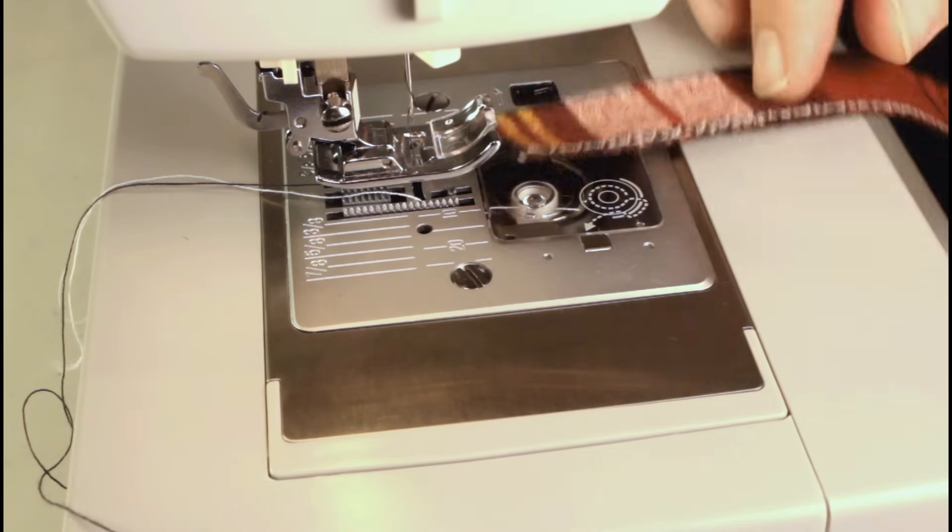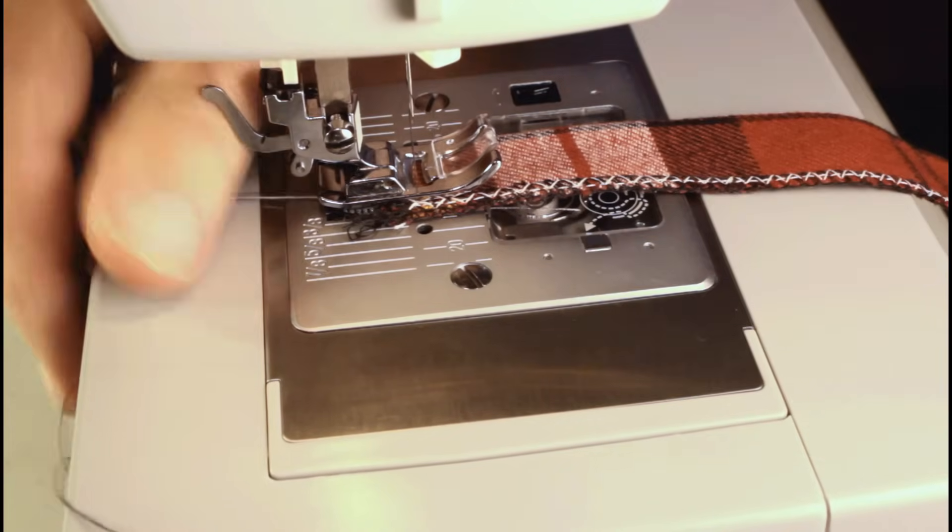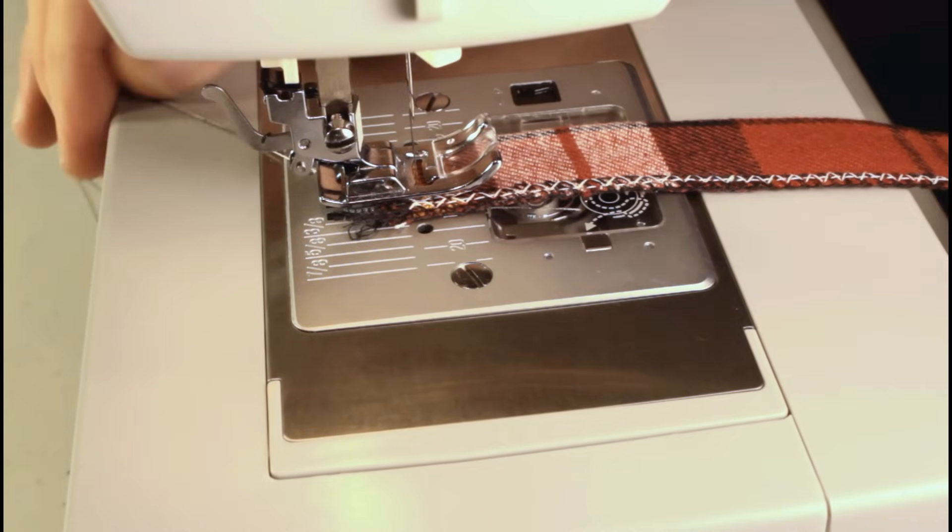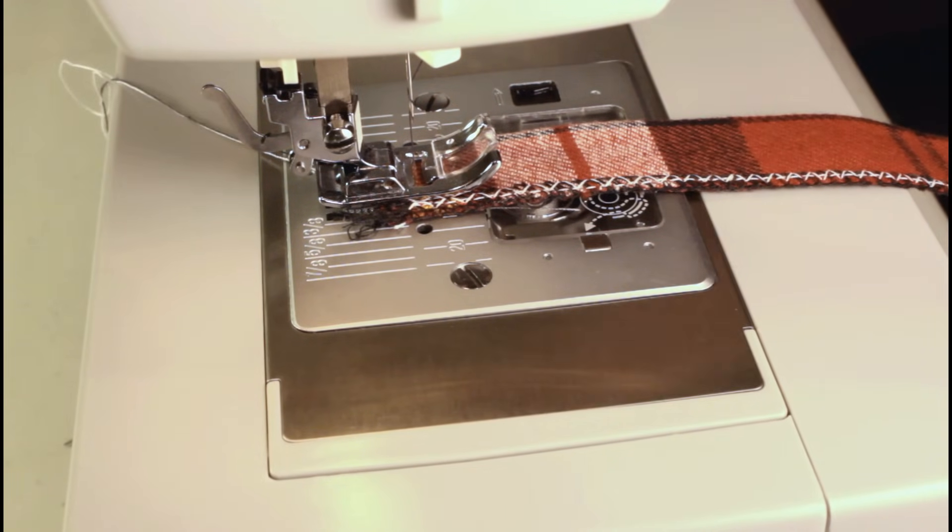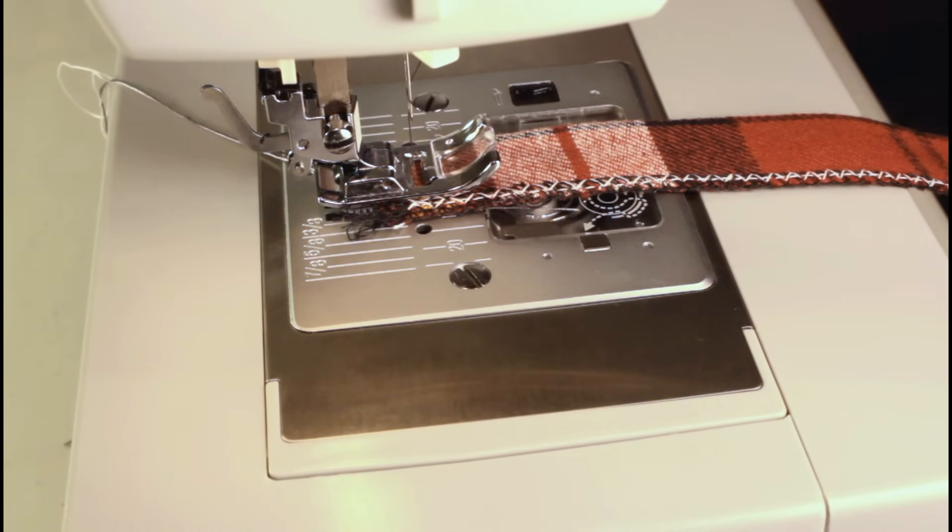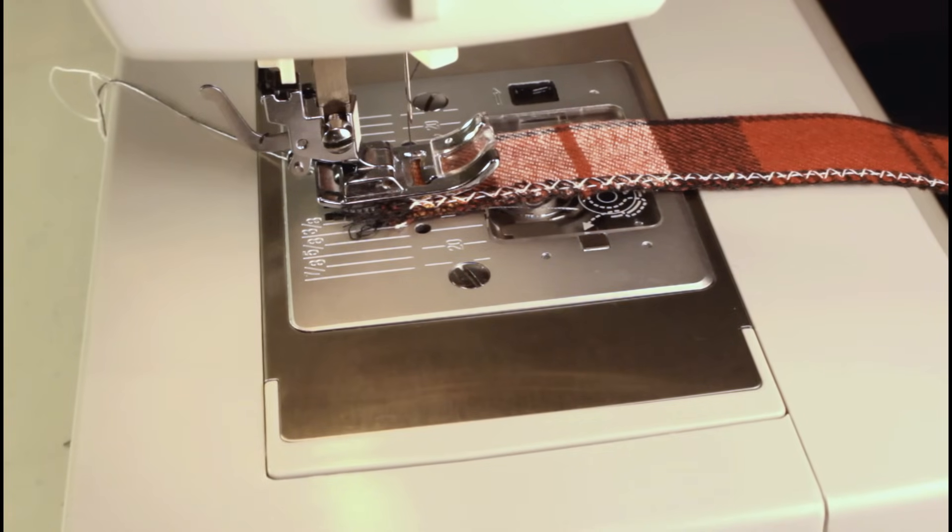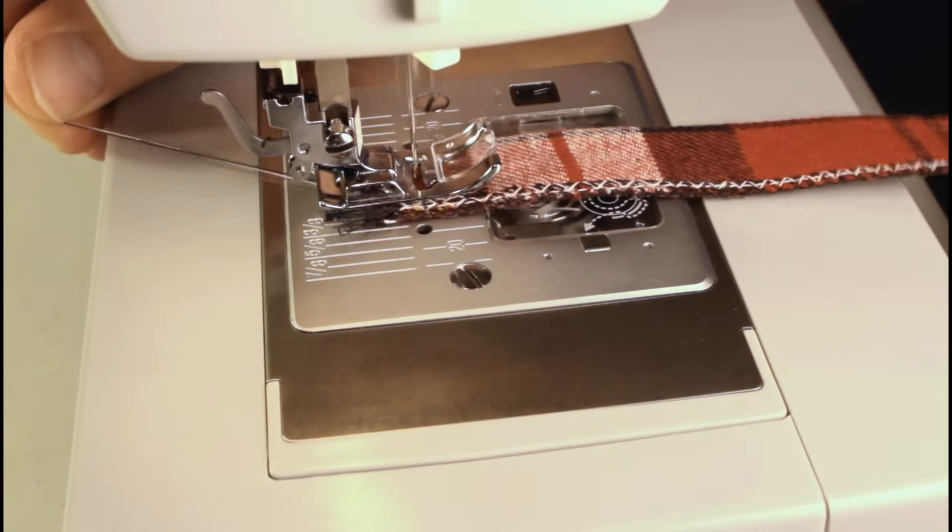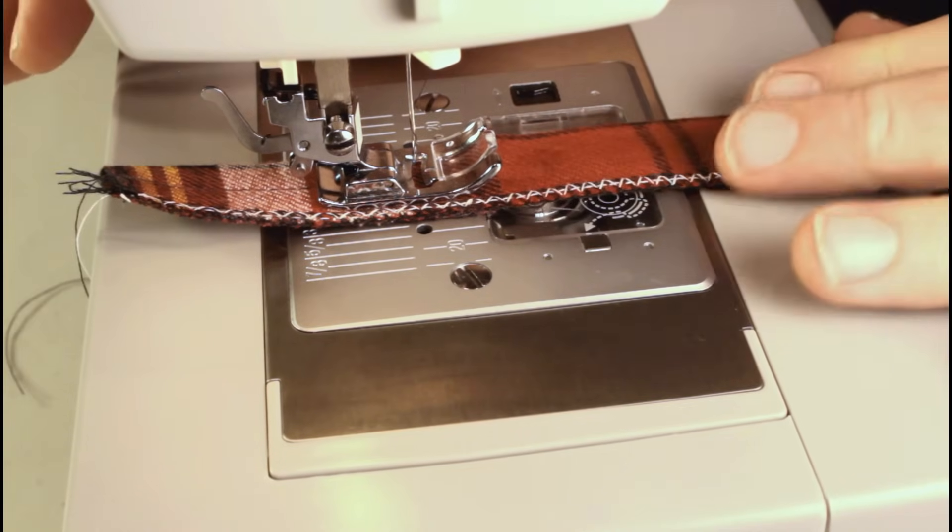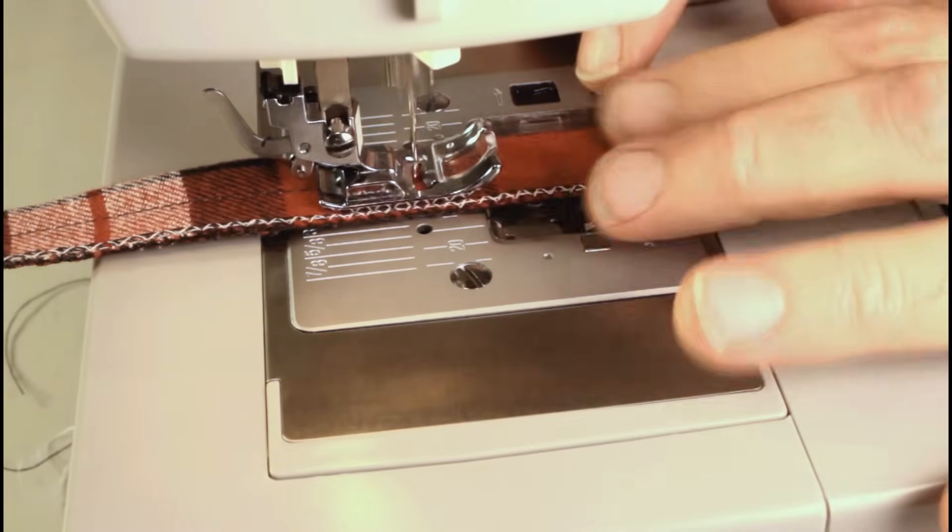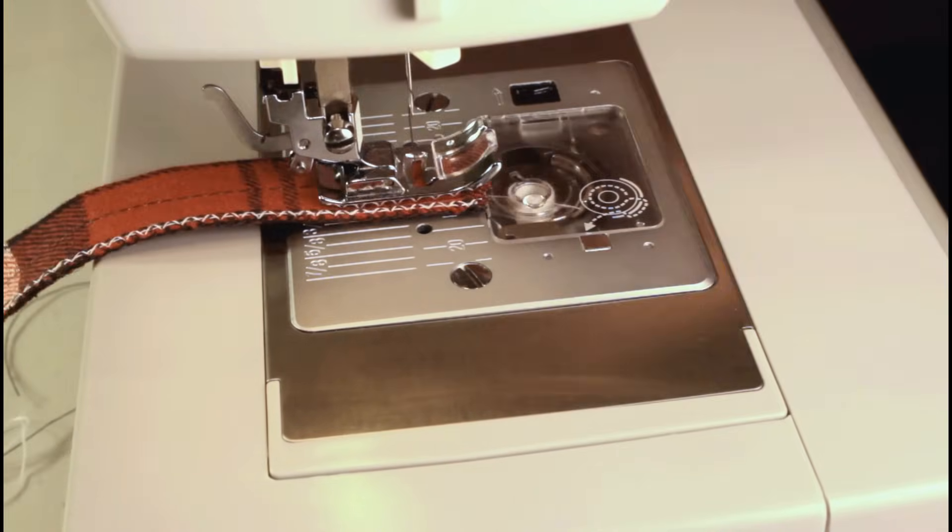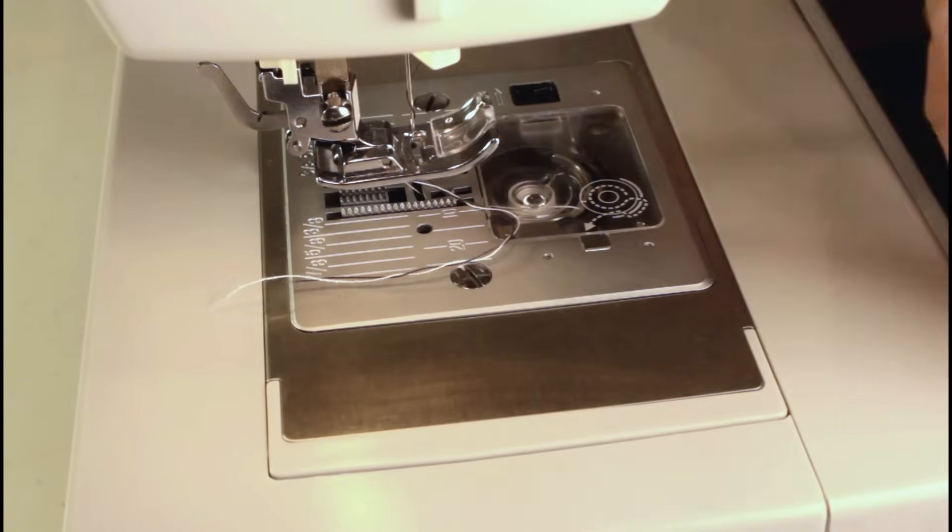Alright. Got a small piece of flannel here. Give it a try on. See how it looks. Alright. Let's see. My tension is set at 4 which is average. Stitch length down to 3. Alright. Here we go.